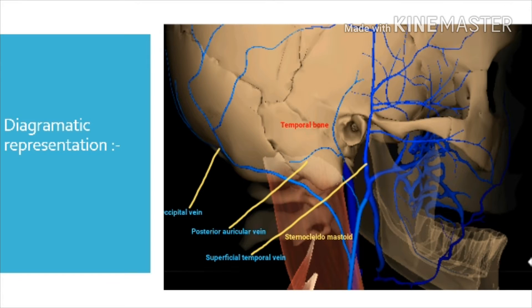Here we have a diagrammatic representation of the temporal bone, showing the sternocleidomastoid, the superficial temporal vein, the posterior auricular vein, and the occipital vein.